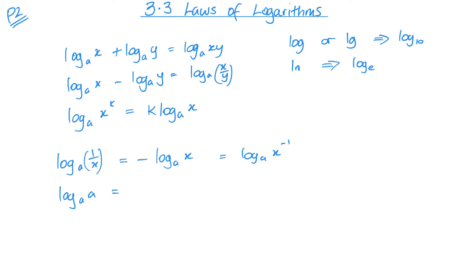The log of a value that has the same base — this was one of the questions in the previous video — gives you one. And when you get log of one with any base, that equals zero. So those are things to be aware of. For these special cases, a has to be positive and cannot equal one.